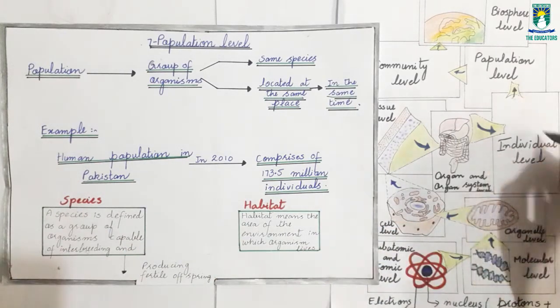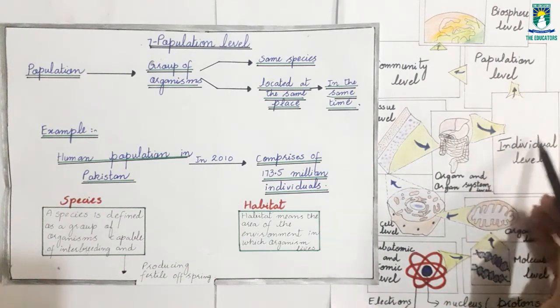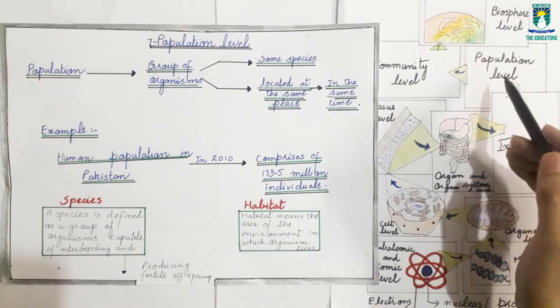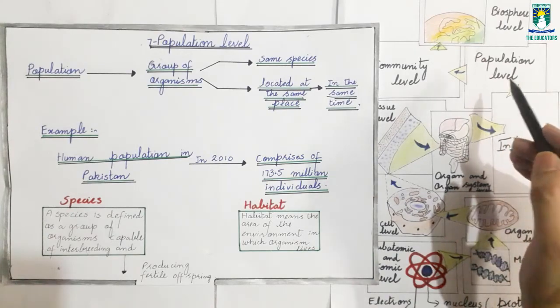So individuals, the same kind of individuals, assemble together to form the population which are living at the same place at the same time.